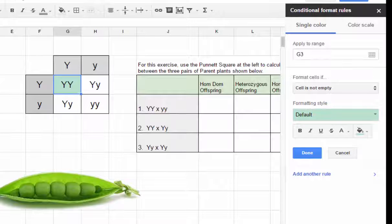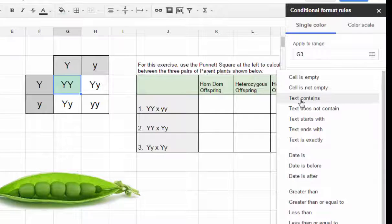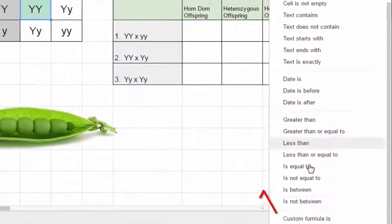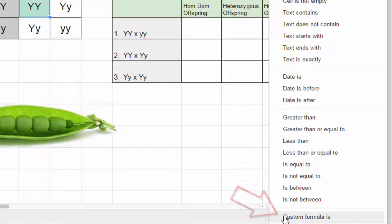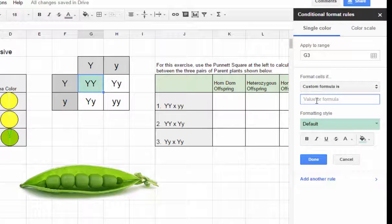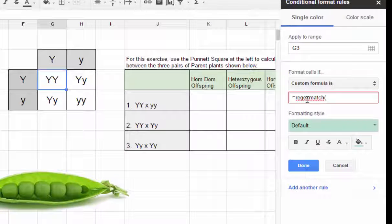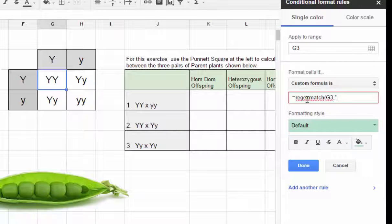Remember that conditional formatting is under the format menu. Instead of doing cell contains or text contains or text is exactly, I'm going to scroll to the very bottom and use custom formula is. In this section right here we'll put equals regular expression match and we'll open our parentheses.